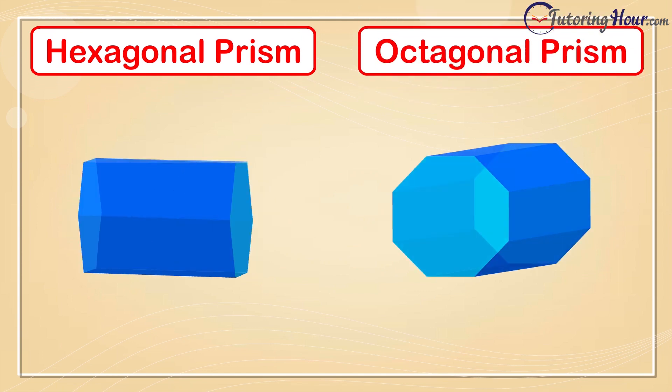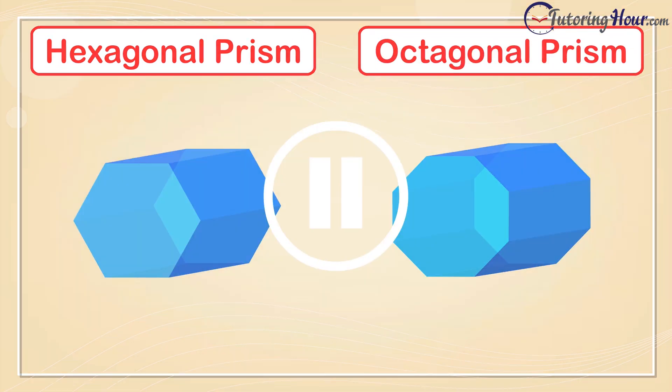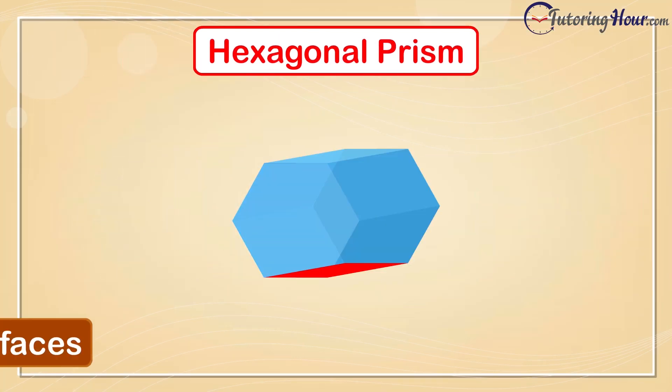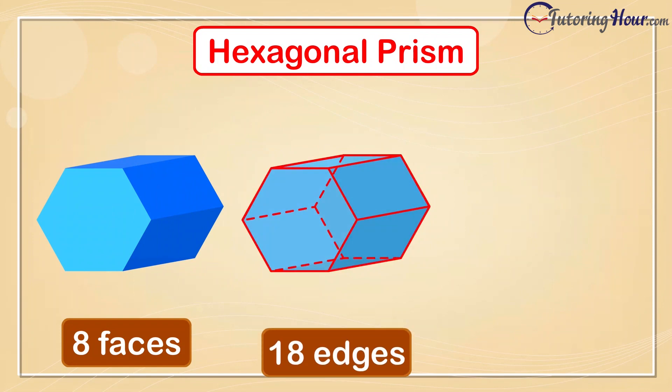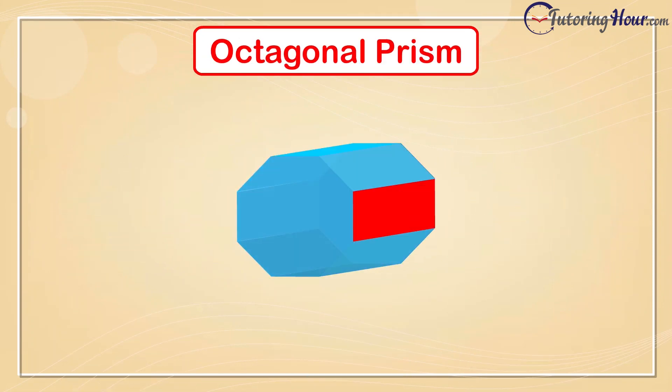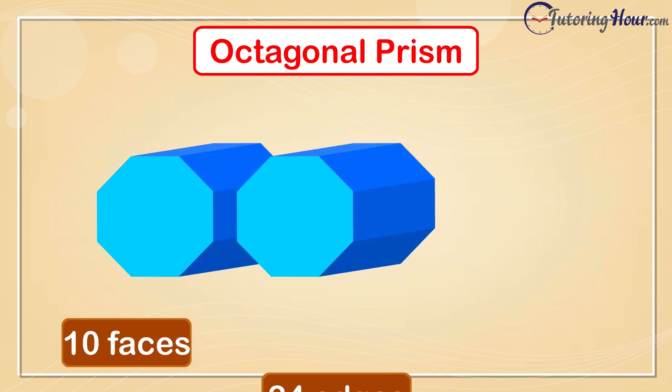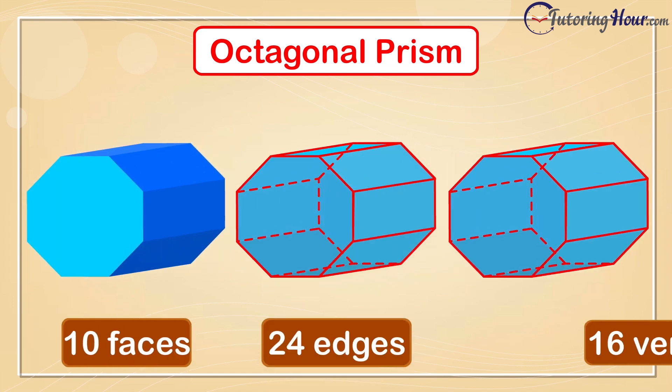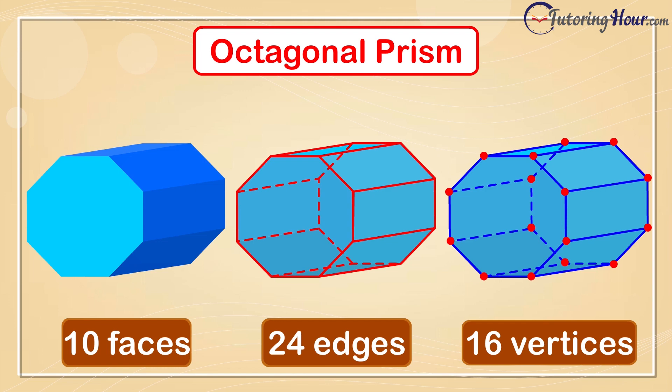Pause the video, take a look at the hexagonal and octagonal prisms, and write down the number of faces, edges, and vertices in them. A hexagonal prism has 8 faces, 18 edges, and 12 vertices. An octagonal prism has 10 faces, 24 edges, and 16 vertices. Give yourself a pat on the back for getting them right.